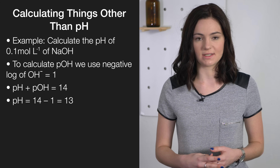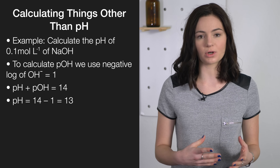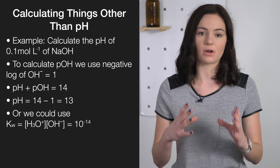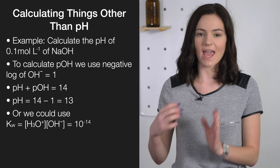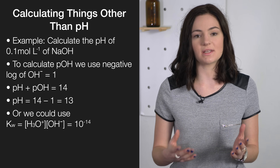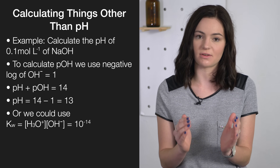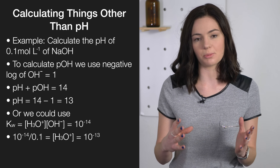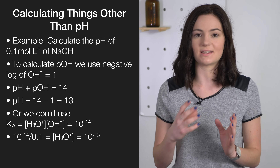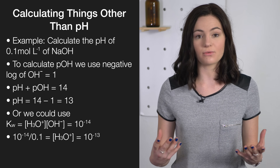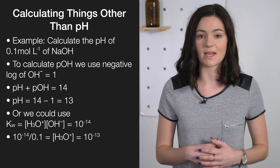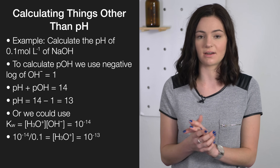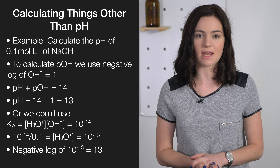Another method is using the water constant. We know that the water constant equals 10 to the negative 14, which equals the product of the concentration of the hydroxide ions and the H3O+ ions. So in this case, the concentration of the hydroxide ions is 0.1. We can solve for H3O+ to get 10 to the negative 13, and then plug that into the pH formula: negative log of 10 to the negative 13 gives a pH of 13.